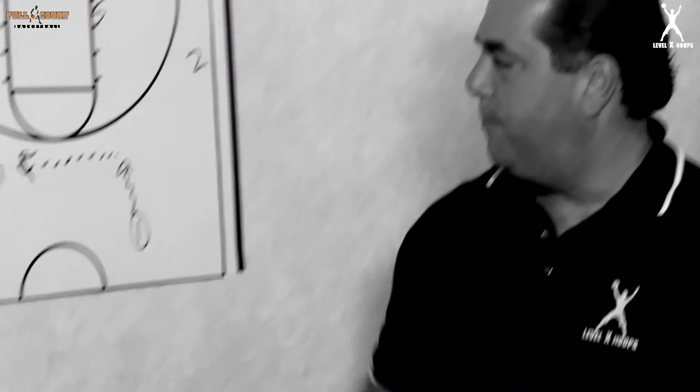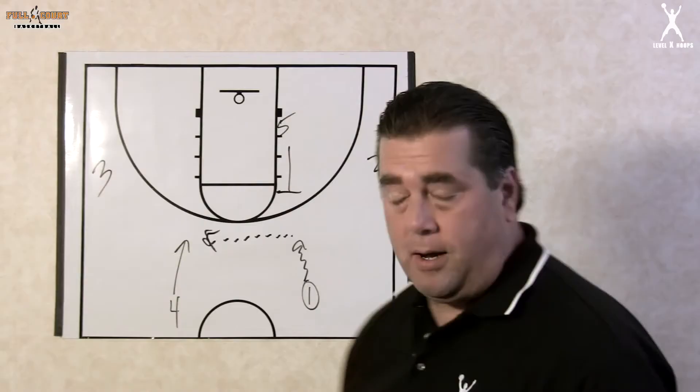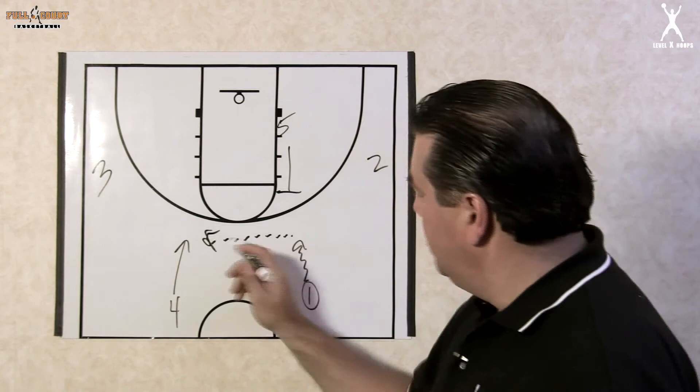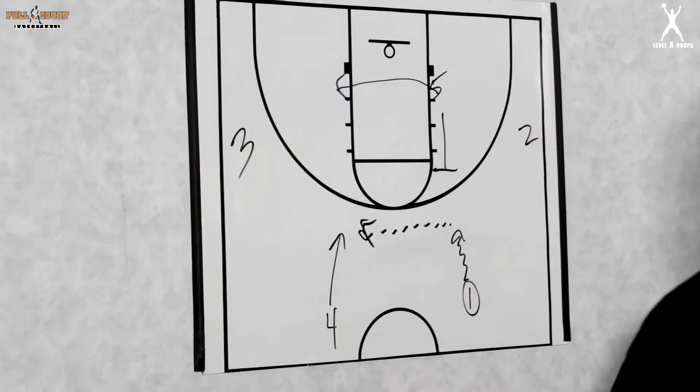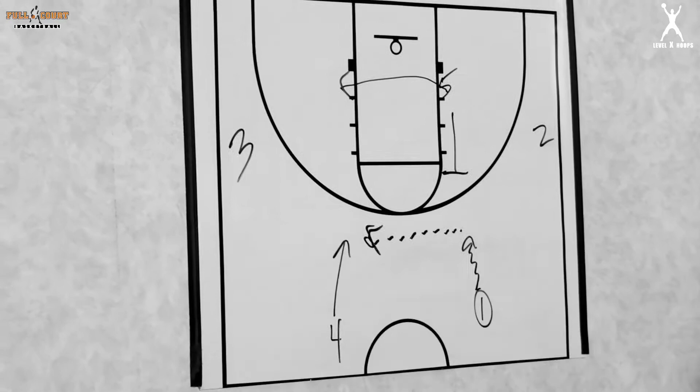We're going to show the back screen option later in the offense. The other option that five can use when the ball is reversed across the top is he can simply follow the ball across the top and maybe look for a high-low pass from number four. Now we're right back into our Princeton series alignment with two and three high. Four's got the ball, one is now in the trailer spot, five is in the ball side block, and you're ready to get into the offense using your trailer entry.